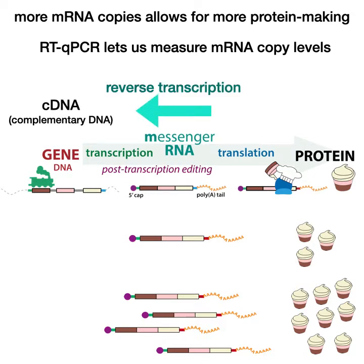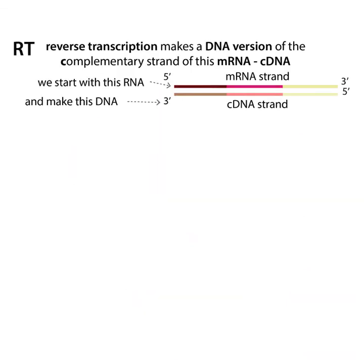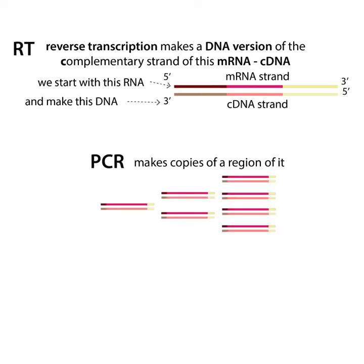The RT stands for reverse transcription. Remember how the DNA to RNA step is called transcription — that's what normally happens. In reverse transcription, we make a DNA copy of that RNA, and we call this cDNA for complementary DNA, because the DNA strand we're making is the complement of the mRNA strand. We make the cDNA and then copy just a specific region of it that we're interested in — something specific to the gene of interest that won't be copied elsewhere in the DNA, so you don't get a false signal.